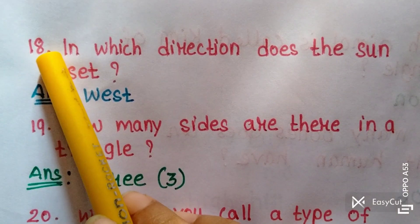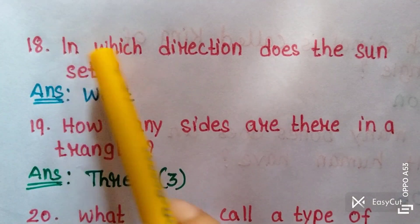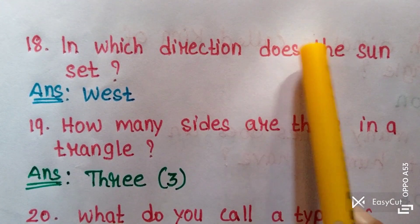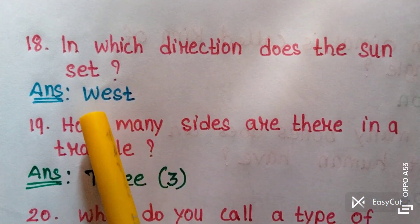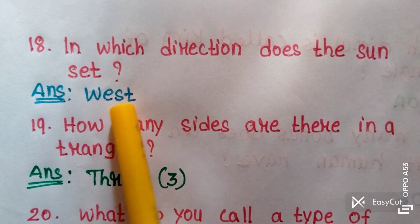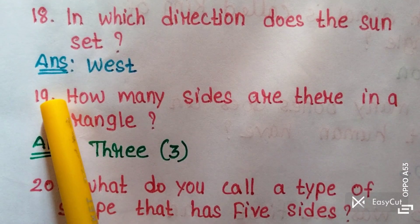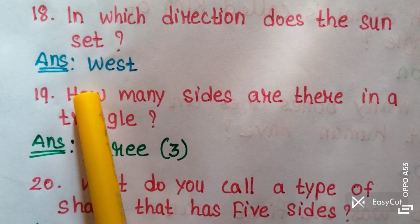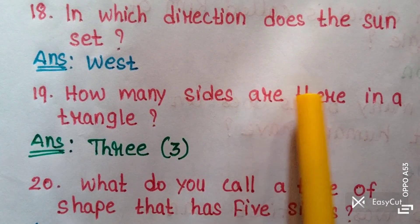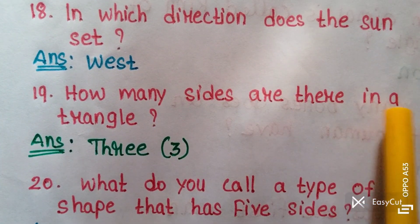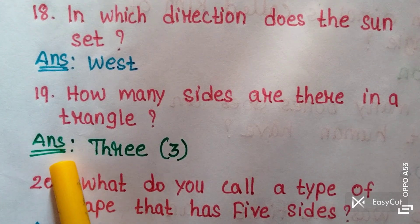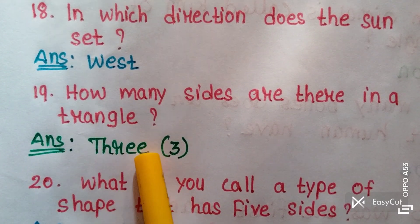Question eighteen: In which direction does the sun set? Answer: West. Question nineteen: How many sides are there in a triangle? Answer: 3.